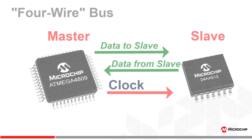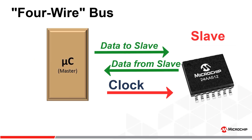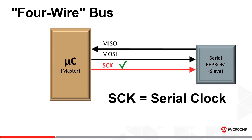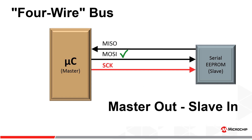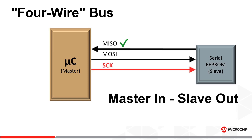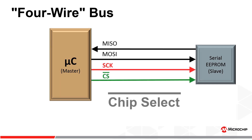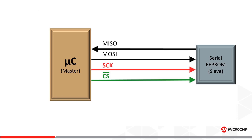SPI is also referred to as a four-wire bus as there are three bused signals: serial clock or SCK, master out slave in or MOSI, and master in slave out or MISO. But because SPI does not include a slave addressing method in the protocol, a fourth signal, chip select or CS, is needed to select each slave.